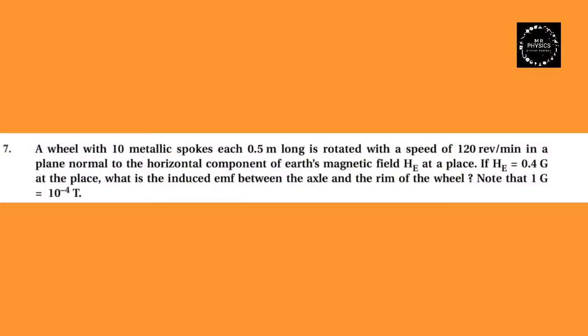Example 6.7: A wheel with 10 metallic spokes each 0.5 meter long is rotated with a speed of 120 revolutions per minute in a plane normal to the horizontal component of Earth's magnetic field He at the place. If He is equal to 0.4 G at the place, what is the induced emf between the axle and the rim of the wheel?